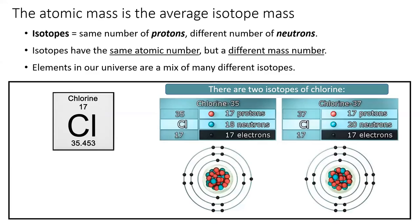Recall that isotopes of an element have the same number of protons, but different masses due to a different number of neutrons. For example, this slide shows two isotopes of chlorine. One with a mass of 35 amu, and the other with a mass of 37 amu.